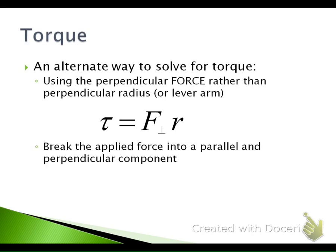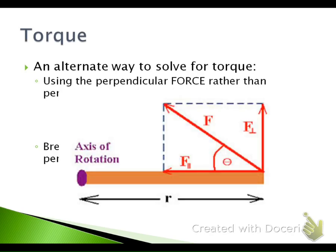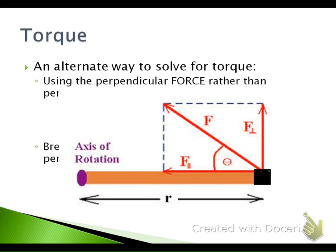The way we do this is: take our force, which might be applied at an angle, and break it into parallel and perpendicular components. Here's my applied force, here's my axis of rotation, and here's my radius. If I'm applying a force at an upward angle, I break it into a parallel component — because it runs parallel to the radius — or a perpendicular component, which runs perpendicular to the radius. Then solve for this perpendicular side of that triangle and plug that in times the actual radius.